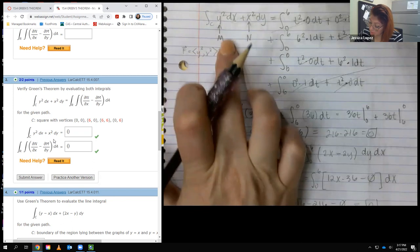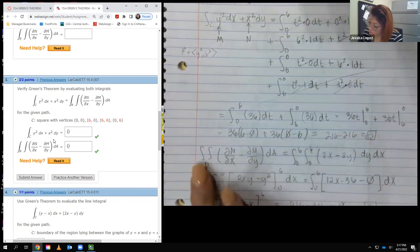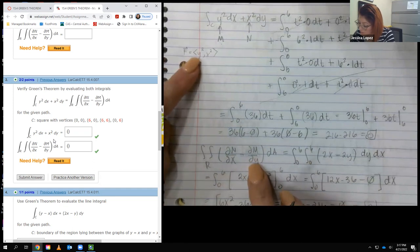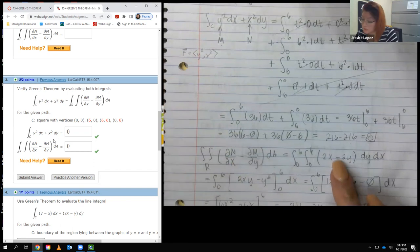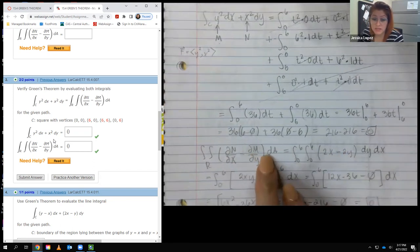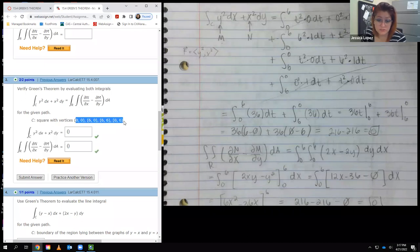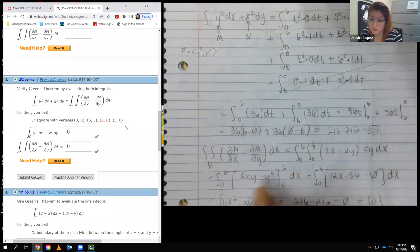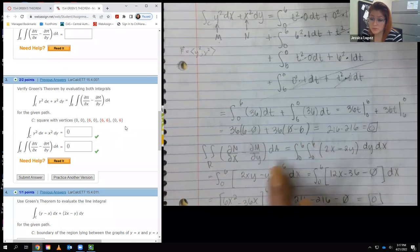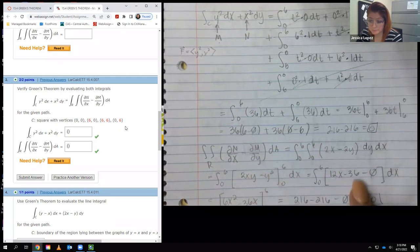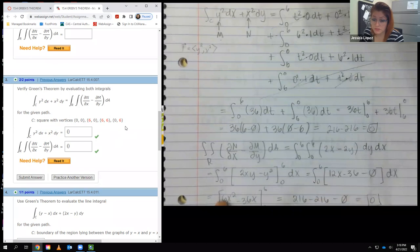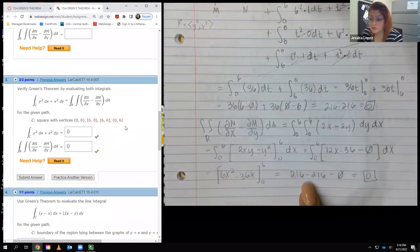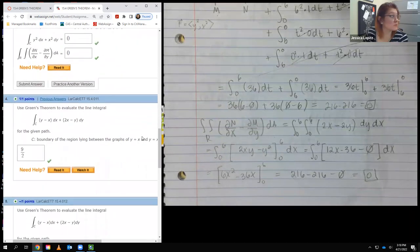So remember, I labeled M as Y squared and N as X squared. So if you're going to do this formula instead, you're going to take the derivative of that N with respect to X which is 2X, and then the derivative of M with respect to Y which is 2Y, and there's a subtraction in the middle. Then your bounds for DA, well both X and Y are going from zero to six. The integral of this is 2XY, integral of that is Y squared, plugged in our sixes, plugged in our zeros, and we ended up with this. Then we took the integral of these two terms and ended up with 6X squared minus 36, evaluated those guys at 6 and evaluated them at zero. And it turns out that this is also zero.